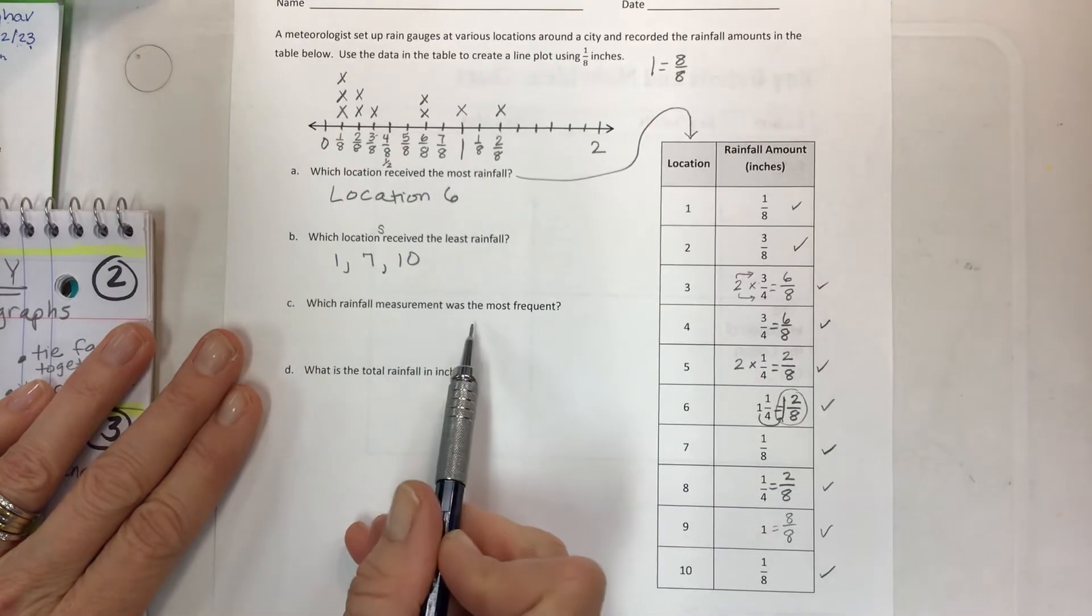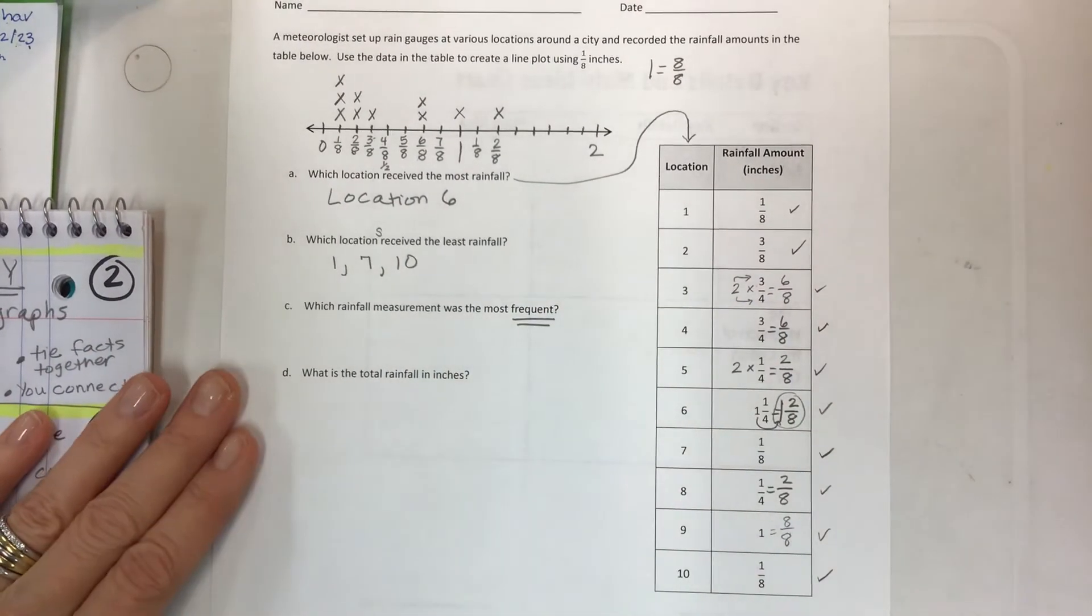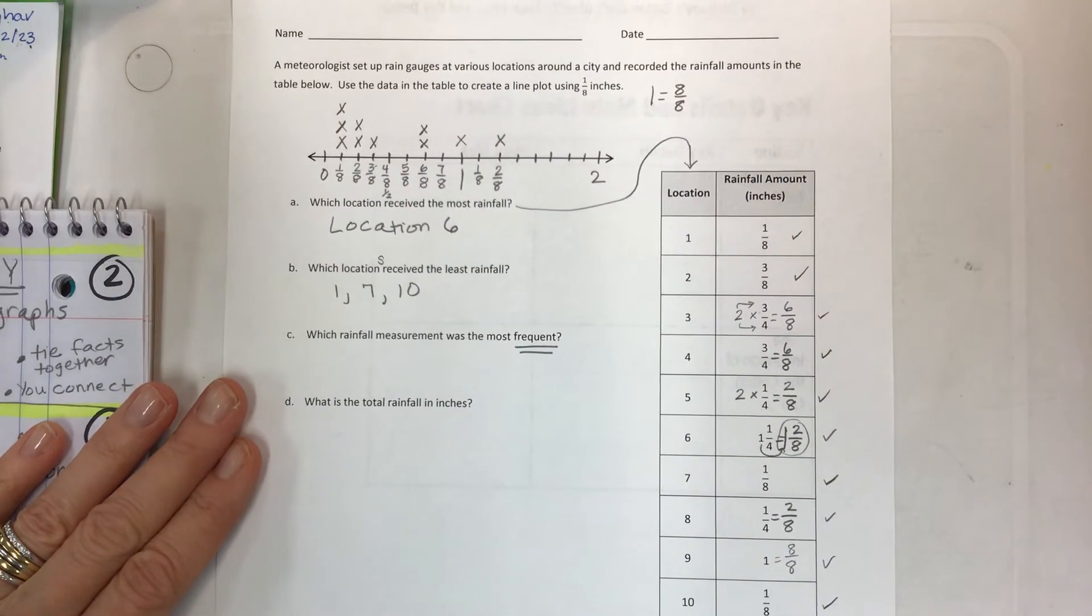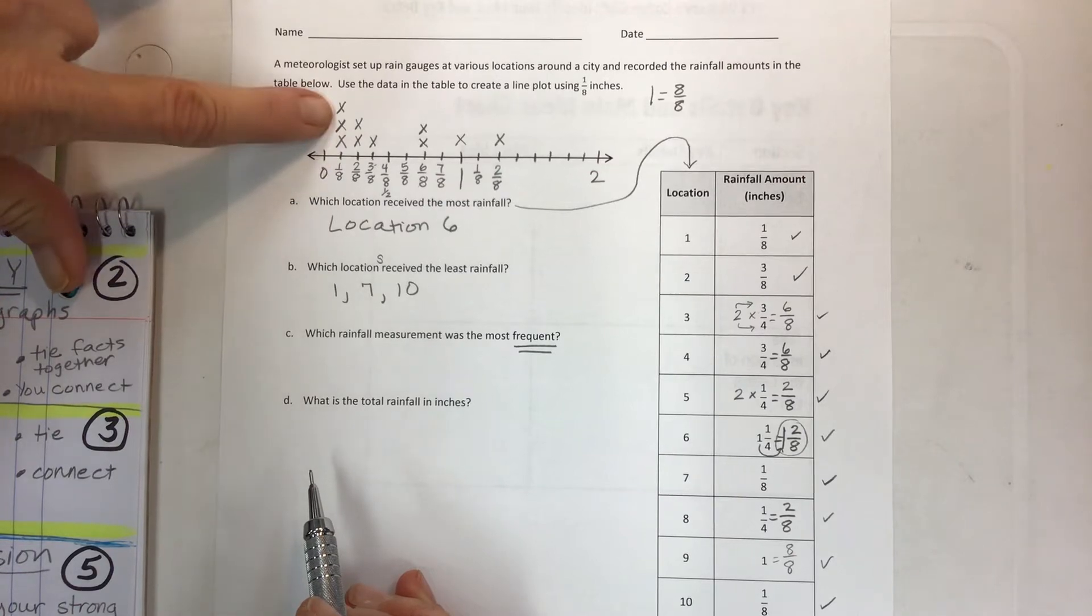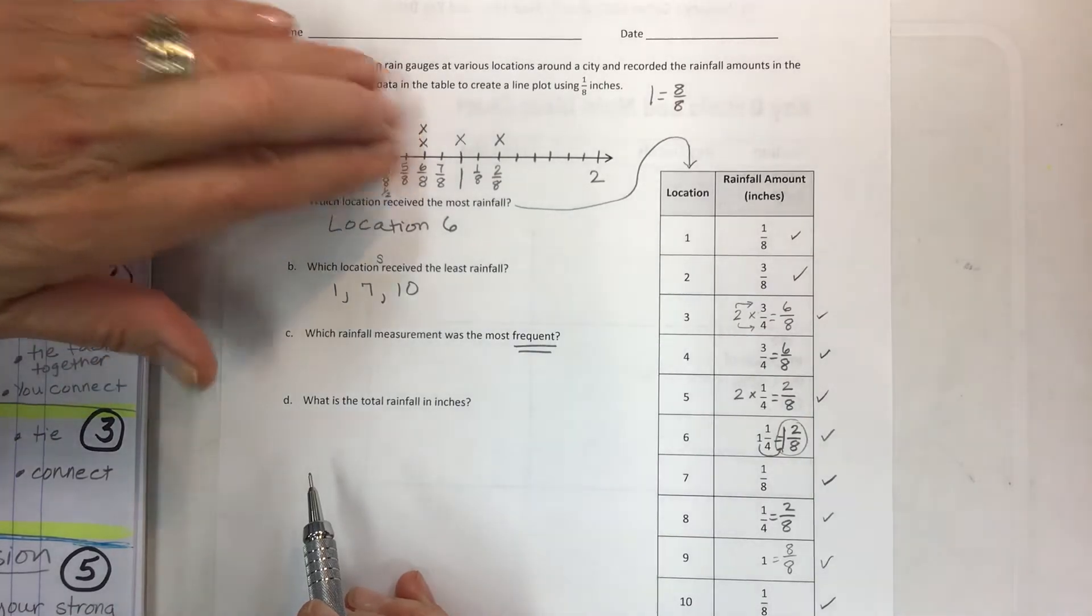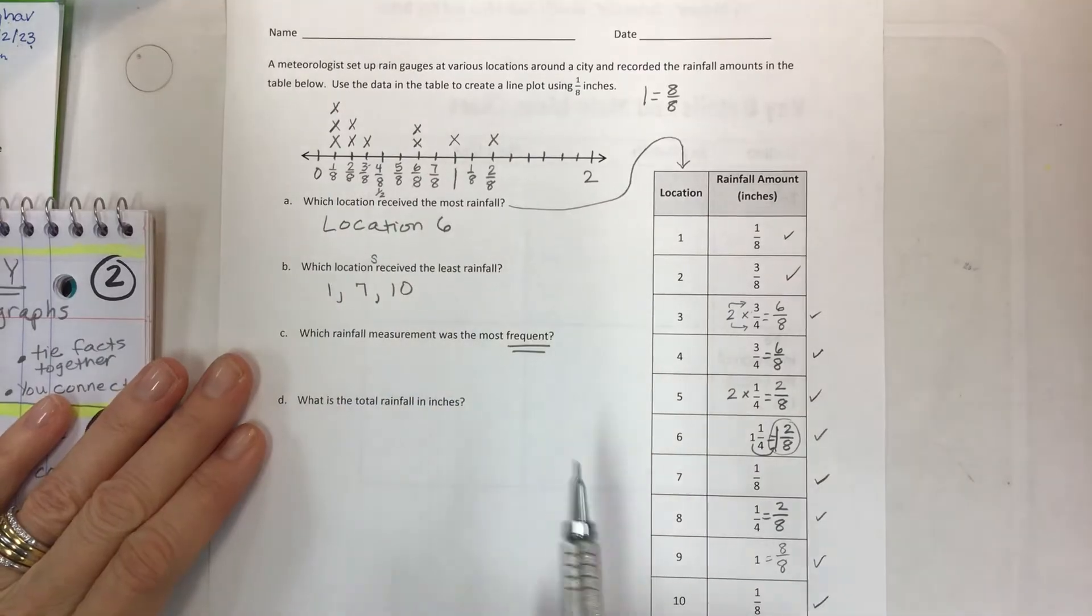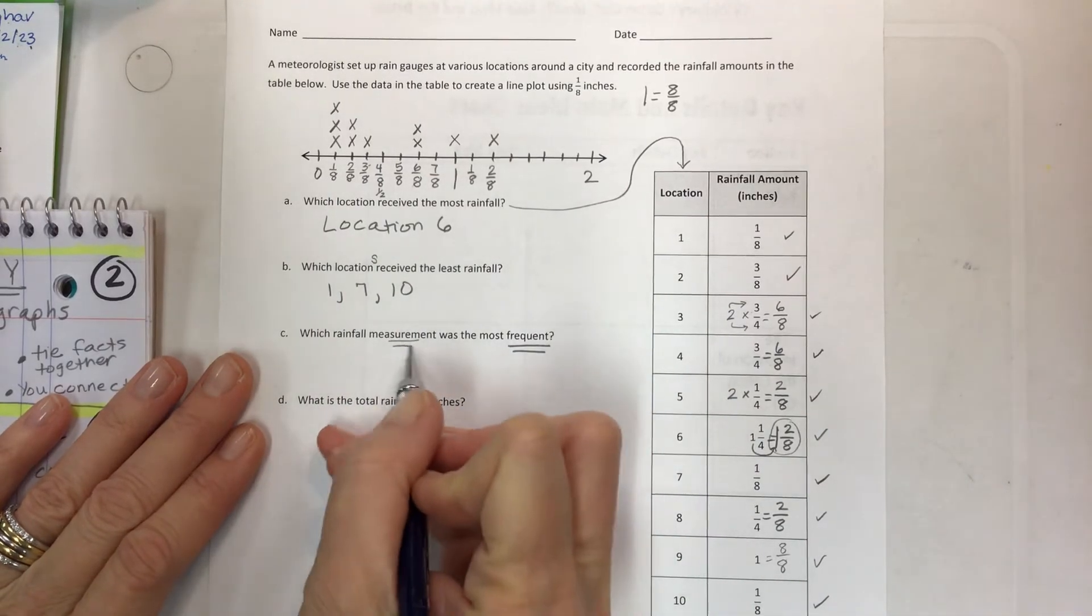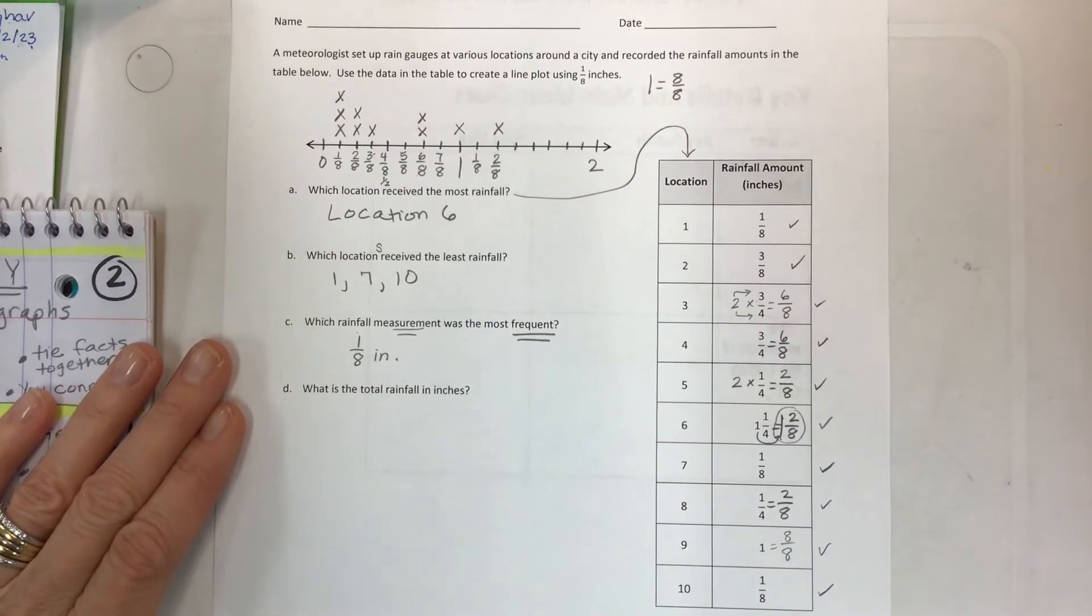And then which rainfall measurement was the most frequent? Now this is what line plots often talk about is frequency and the things that start to develop the pattern. And so the frequency or pattern building is where are all the X's? Where are the second most amounts of X's? And so that one stands out as being one-eighth.